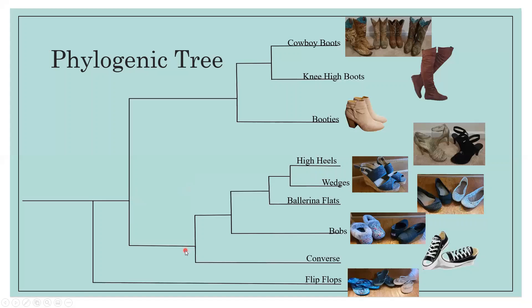So then we have the out-group, which is the species or OTUs that is known to diverge earlier than the rest of the OTUs. So essentially this would be the flip-flops because if you look, they diverge earlier before the rest of the other shoes. So while all these shoes have this common ancestor, flip-flops do not because they diverged earlier.